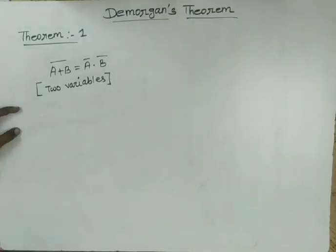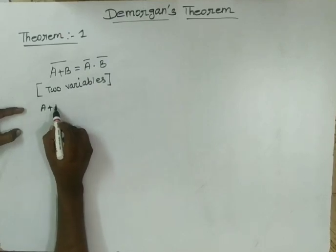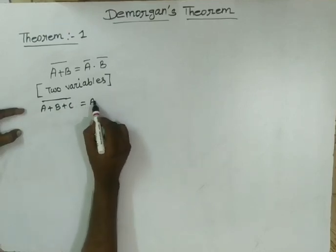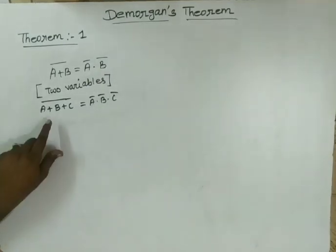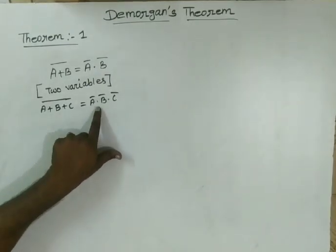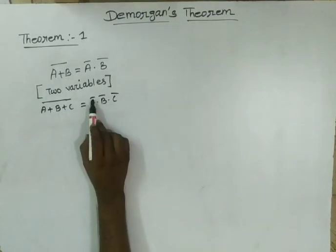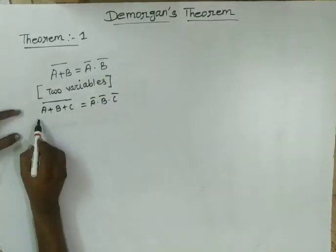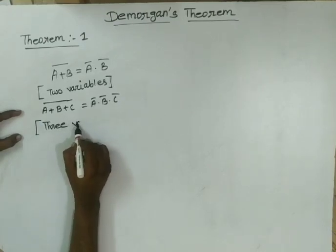Now the three-variable form of De Morgan's first theorem: A plus B plus C whole bar equal to A bar dot B bar dot C bar. This means addition on the left hand side, multiplication dot on the right hand side, and whole bar on the left becomes separate bars on the right. This is called De Morgan's Theorem 1 for three variables.